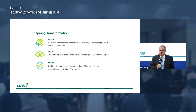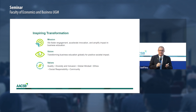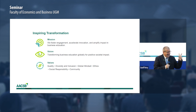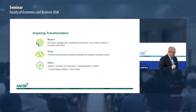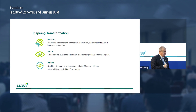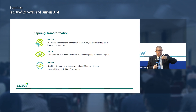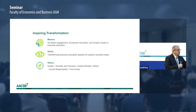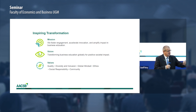When you go for accreditation, you will have to talk about your mission, so we have one as well. Our mission is about fostering engagement, accelerating innovation, and amplifying impact in business education. Engagement, innovation, and impact are key words in our accreditation — we call them the pillars. Our vision is to transform business education globally for positive societal impact. It's a bigger purpose. We're preparing students to make a difference in their companies, in broader society, in their communities.